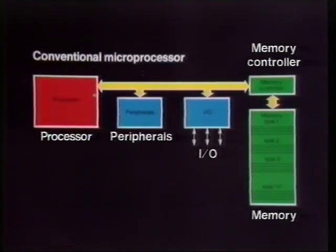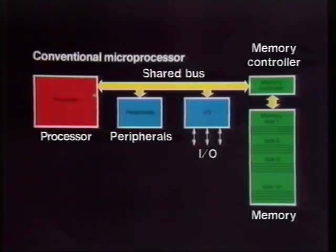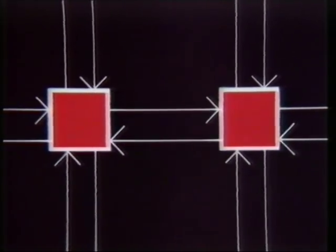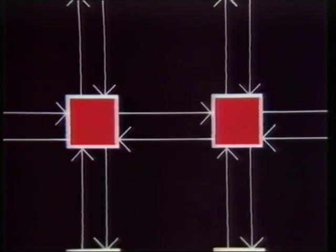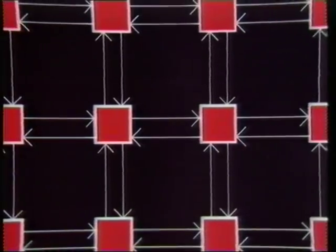The problem with conventional microprocessors is that they communicate using a shared bus, and because only one transaction can take place at a time, the result is a communications bottleneck. Not so with the transputer. Its links are not shared. Each one connects just two transputers. This allows each communications link to operate concurrently and yet independently of all other links.